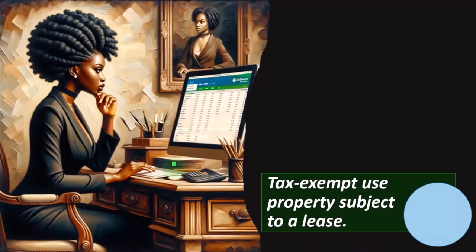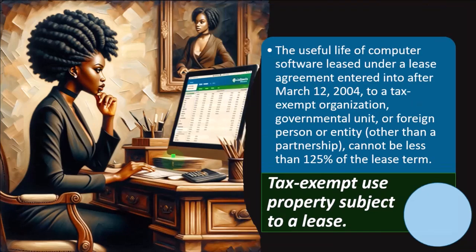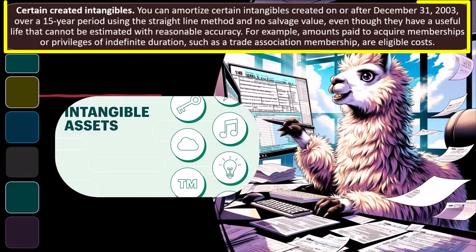Tax-exempt use property subject to a lease: the useful life of computer software leased under a lease agreement entered into after March 12th, 2004 to a tax-exempt organization, governmental unit, or foreign person or entity other than a partnership cannot be less than 125% of the lease term. Then we'll dive more into the MACRS situation, which is the standard depreciation for much of property, plant, and equipment.